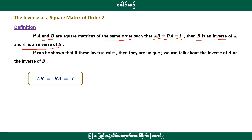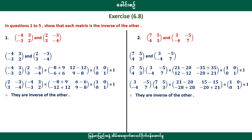It can be shown that this inverse exists. In fact, this inverse is the identity matrix. We can talk about the inverse of A and the inverse of B. Each matrix is the inverse of the other.